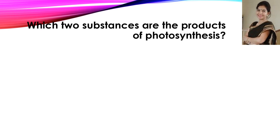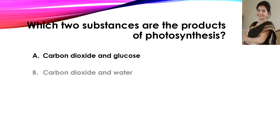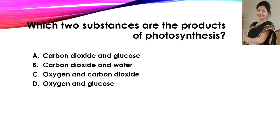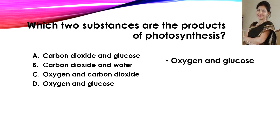Now the next question: which two substances are the products of photosynthesis? The correct answer is oxygen and glucose.